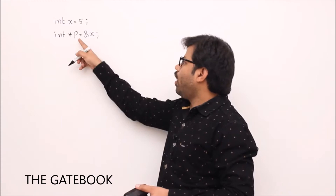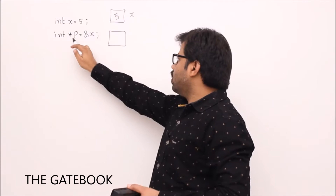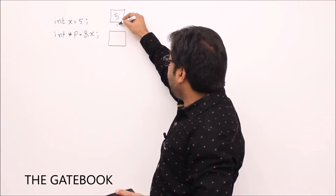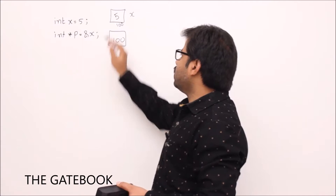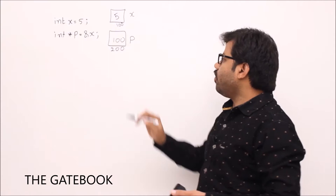It is all about modifying x through p. Similarly, you can have a pointer to p. If you want to modify p, I'll show this pictorially. This is x and the content of x is 5. Since in the definition of p you have initialized p with the address of x, and address of x is 100, then p gets 100. P also will have some memory address — let's say that is 200, because every variable goes to memory and they will have memory addresses.